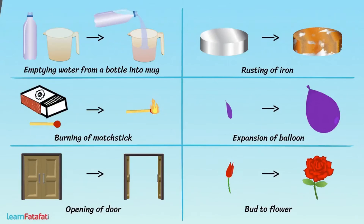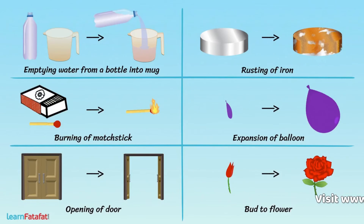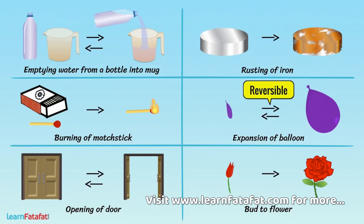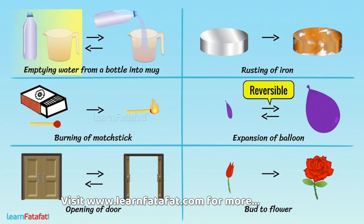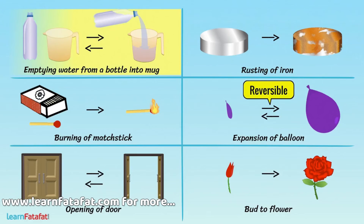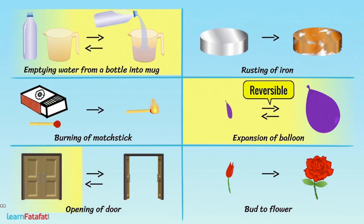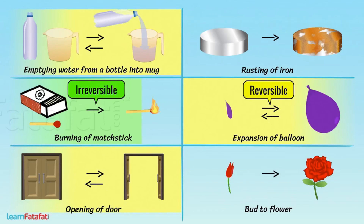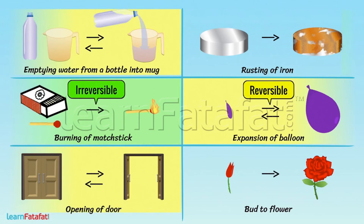Identify the reversible and irreversible changes from the given examples. Out of the given examples, reversible changes are: emptying water from a bottle into a mug, expansion of balloon, and opening of door. The irreversible changes are: burning of matchstick, rusting of iron, and bud to flower.